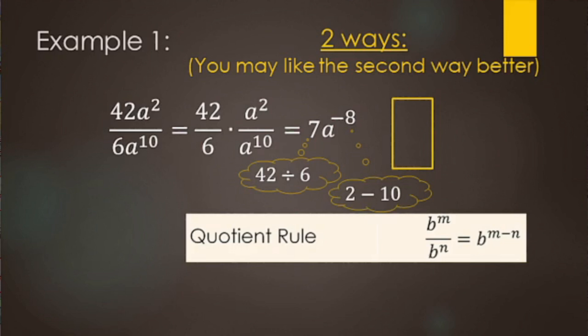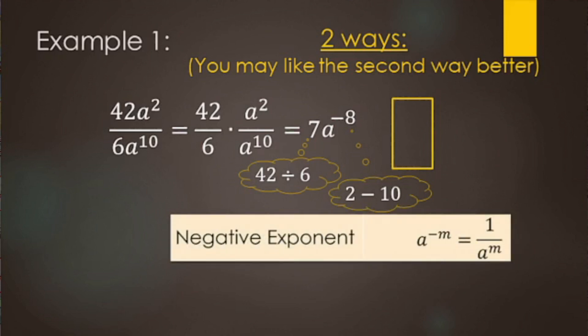Some teachers won't accept negative exponents — they want all positive exponents. So we use the negative exponent property. The 7 stays in the numerator. When you have a negative exponent in the numerator, you put it in the denominator and change it from negative to positive. So the answer is 7 over a to the eighth.